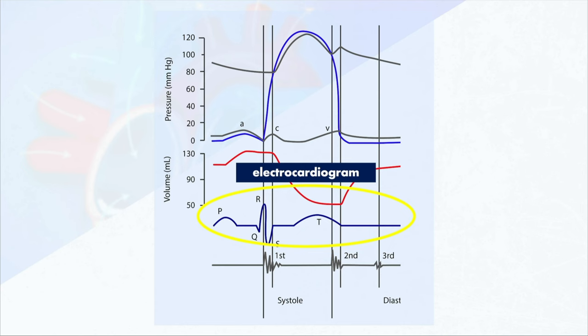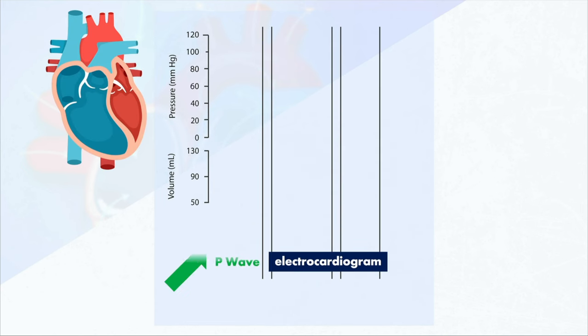The SA node generates a signal. And since the SA node is located in the right atrium, that signal starts right there, and it spreads throughout the rest of the atria. So when we look at the electrocardiogram, what we're going to see is a P wave. That P wave shows the depolarization of the atria — in other words, it's showing you the spread of the signal across the atria.